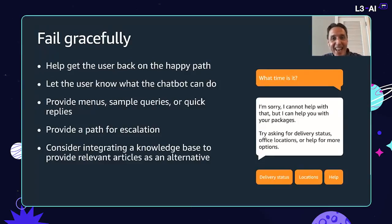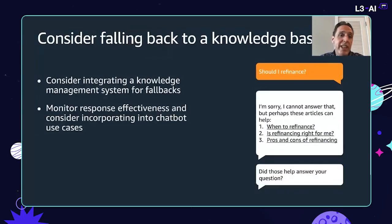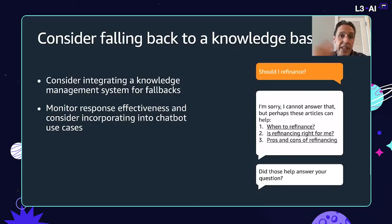Fail gracefully — this is the biggest takeaway. It's hard to know all the ways people might communicate, so the trick is to get them back on the happy path: let users know what the chatbot can do, show buttons or quick replies, and provide a path to escalation. One thing that worked well is falling back to a knowledge base — instead of saying 'I don't know,' pass the user query into a knowledge base and return a few articles that might answer the question. Track whether people click those links and prompt for feedback: 'Was that helpful?' — all of that feeds back into improving the chatbot.